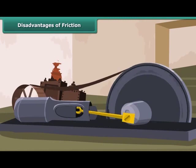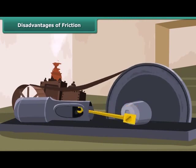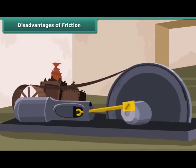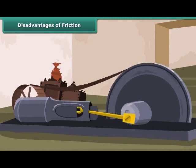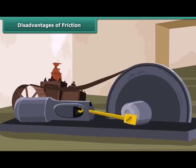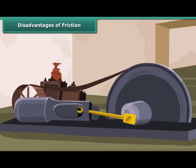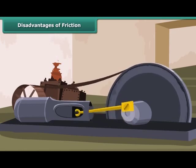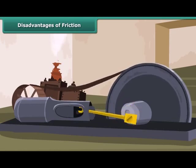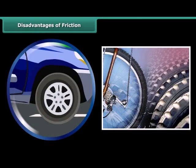There are many moving parts in machines which rub against each other constantly. Due to friction, the rubbing parts of a machine wear out gradually. The tyres of a vehicle also wear and tear due to friction.